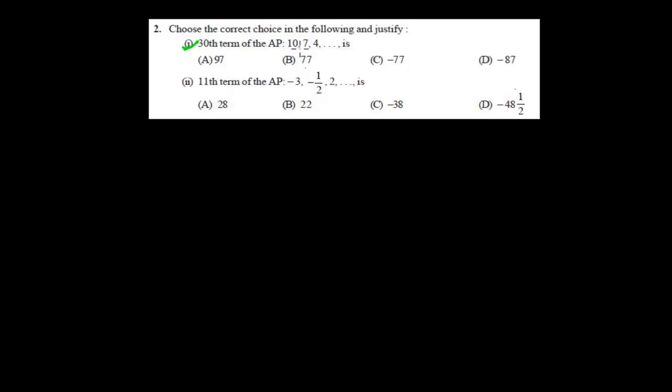The first question is: find the 30th term of an arithmetic progression that is 10, 7, 4... The choices are whether it is 97, 77, negative 77, or negative 87. So then after that we'll be doing the second problem. Let me first do the first problem here.